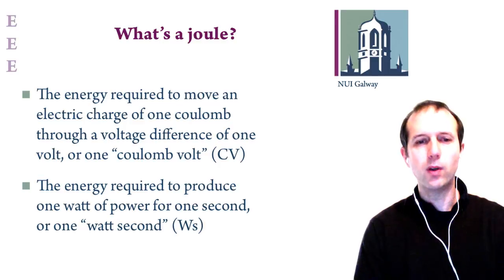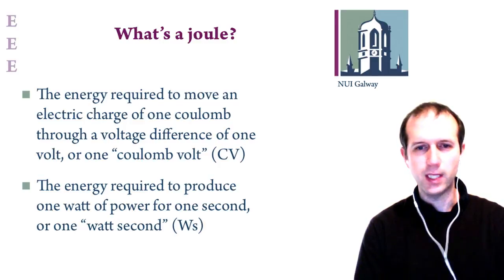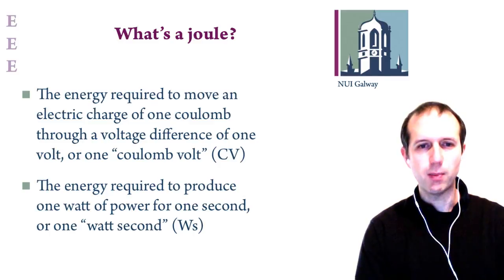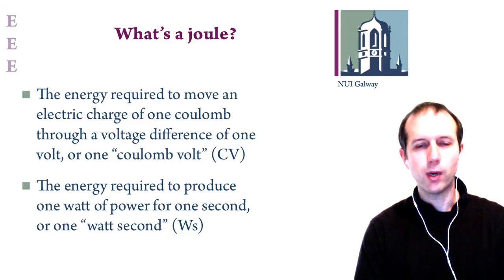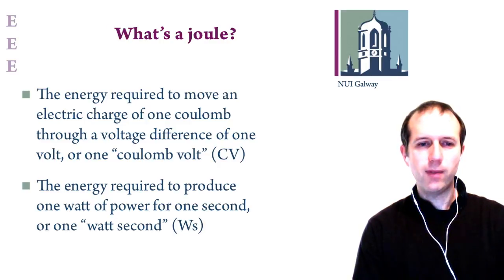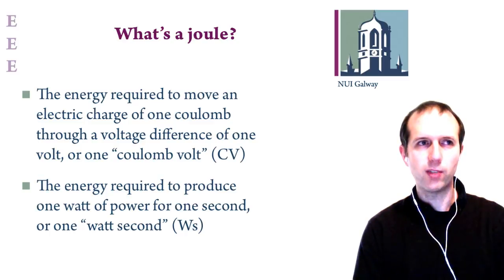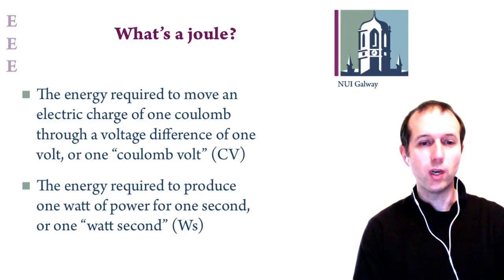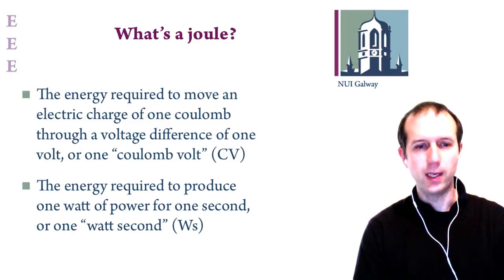One coulomb of charge — remember, that's 6.24 × 10¹⁸ electrons — moved through a voltage difference of one volt requires one joule of energy. Similarly, energy is required to produce one watt of power for one second, so one joule can be thought of as a watt-second, just as a watt can be thought of as joules used per second.